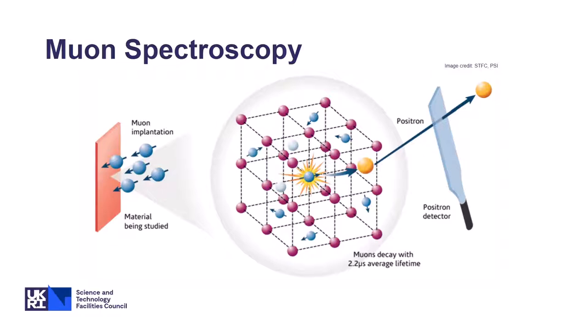A brief overview of muon spectroscopy: muons are positively charged particles that behave essentially like small protons. You fire a beam of them at the material you want to study, and the muons stop somewhere in the material. After a couple of microseconds, each muon will decay, releasing a positron, and the positrons are what are detected by the detectors. Where the muons stop within the material isn't random — it's dictated by the local environment within the material, so every material has quite a distinct set of stopping sites, as they're known.